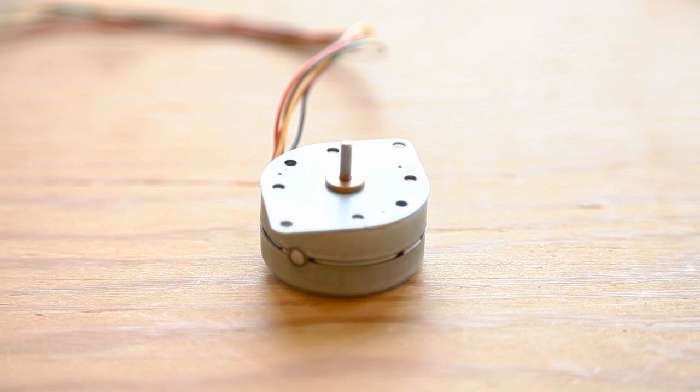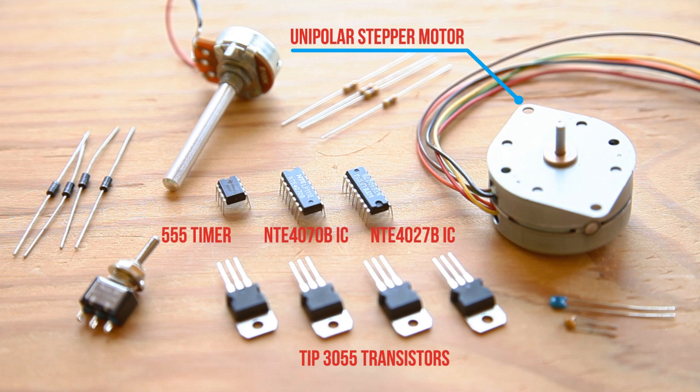Like the name implies, stepper motors step through their motions, moving along two steps inside the motors. This allows for another way of providing precision control, like a servo motor, without the need for an internal gearbox. Your computer printer and similar devices employ steppers. Like the servo, they usually require some finicky electronics to control them, but we're going to do it with a single 555, a couple logic chips, and some transistors.